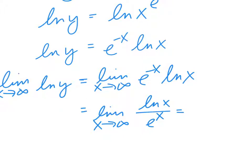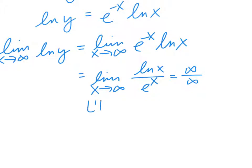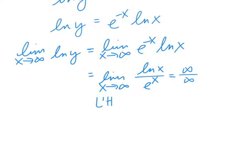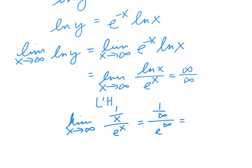Plugging in infinity gives infinity over infinity, so we can use L'Hôpital's rule. Taking the derivative of the top and bottom gives (1 over x) over e to the x. Now plug in infinity: 1 over infinity over e to the infinity. 1 over infinity is 0, and 0 over e to the infinity is 0.